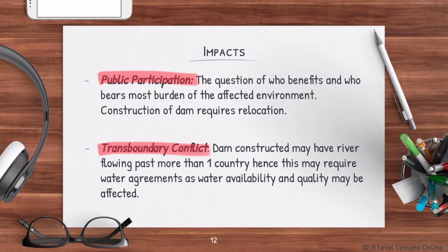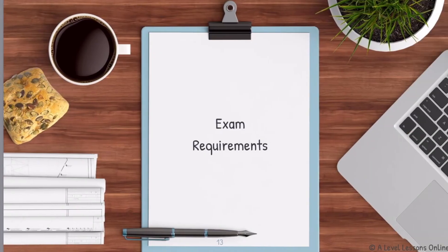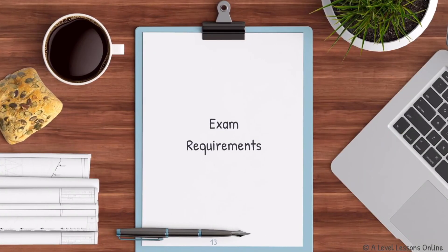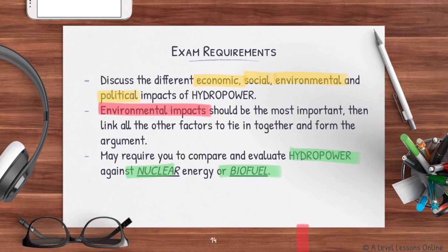For your exam, you need to understand the different economic, social, environmental, and political impacts of hydropower and be able to weigh them. Environmental impacts are arguably most important, as they can lead to further social and economic consequences. These questions will typically ask you to compare hydropower with nuclear energy or biofuel, so take note of that.